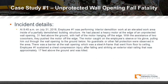Case study number one: an unprotected wall opening resulted in a fatality. At 9:45 a.m. on July 31, 2018, employee one was performing interior demolition work at an elevated work area inside a partially demolished building structure. He had placed a heavy motor at the edge of an unprotected wall opening 31 feet above the ground with half of the motor hanging off the edge. With the assistance of two co-workers, they pushed the motor off the edge, and the motor caught on the employee's sleeve or glove, pulling him through the wall opening to the ground below.